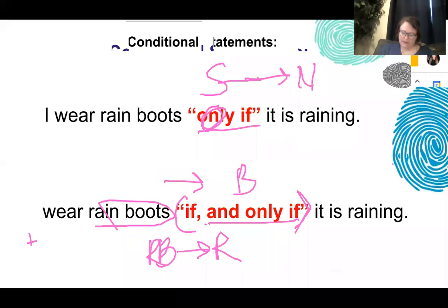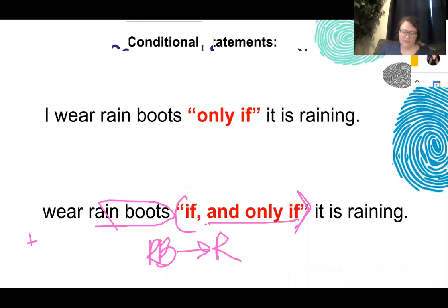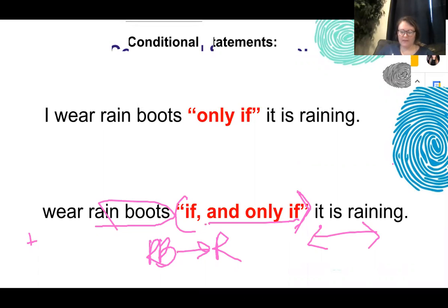'If and only if' brings in a biconditional arrow — it goes both ways. Rain boots and raining go together in both directions. So if I'm not wearing rain boots, it cannot be raining. Or if it's not raining, I cannot be wearing rain boots.